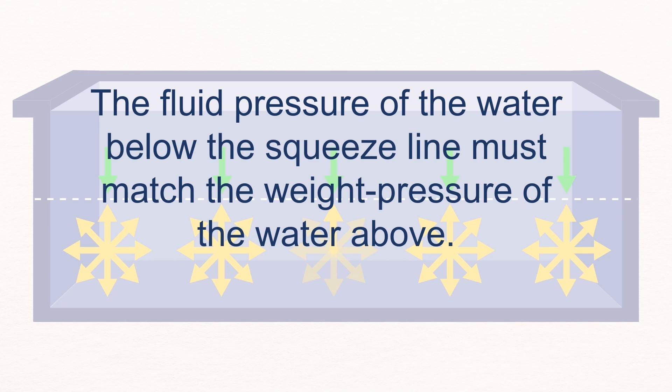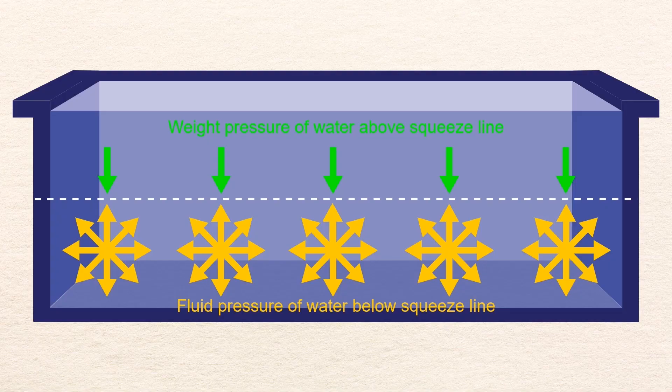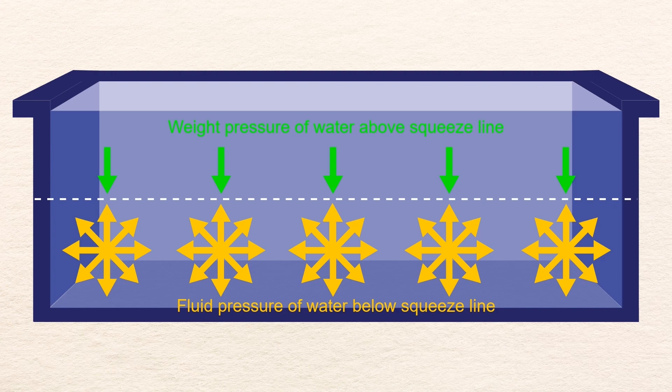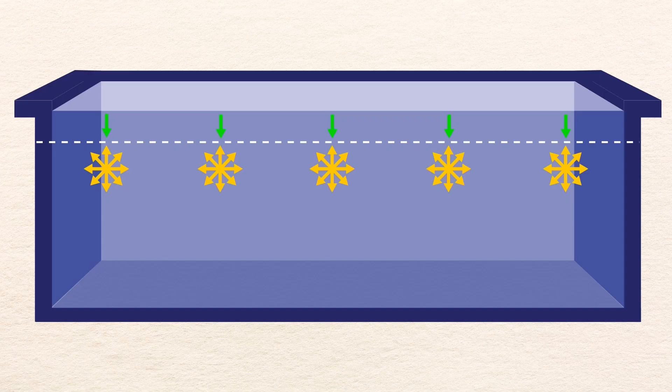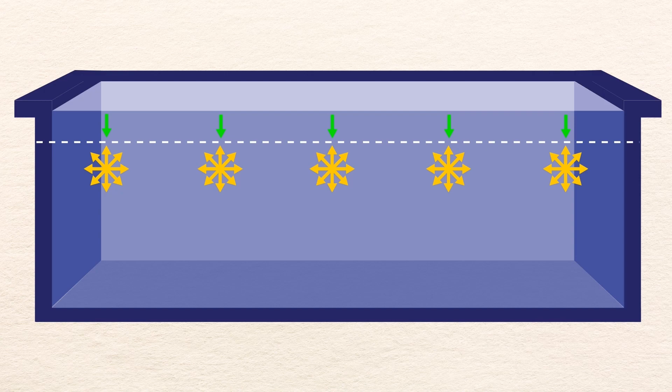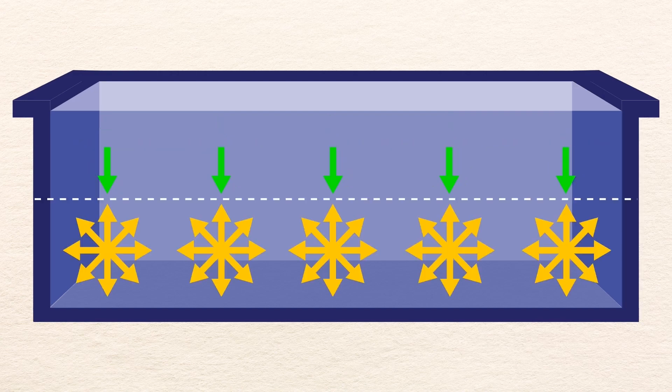When you think about it, that must be the case. Otherwise, that amount of weight would be able to push the squeeze line down even further. To put it another way, the fluid pressure always supports the weight of the water above it. One consequence of this is that at lower depths, where the weight of the water above is greater, the fluid pressure is higher. If we draw a squeeze line near the top of the pool, where there isn't much water weight pressing down, the fluid pressure is relatively low. As we move the squeeze line down, where there is more water weight above it, the fluid pressure increases.